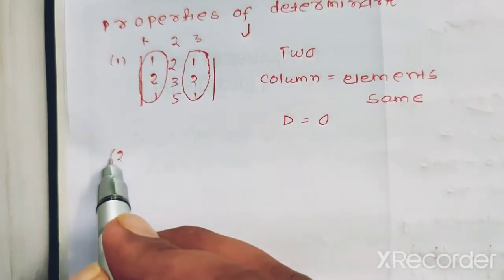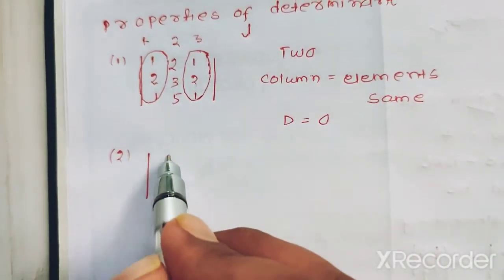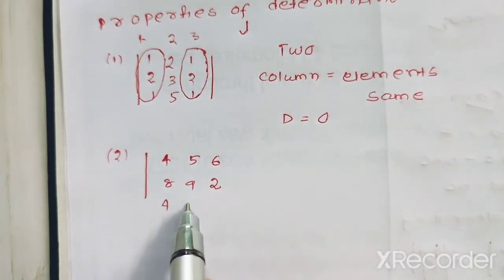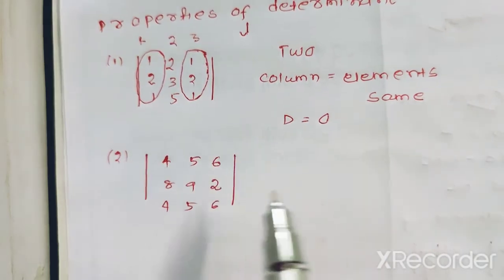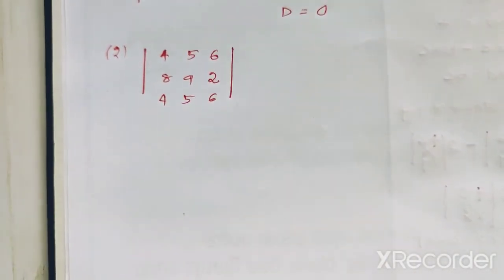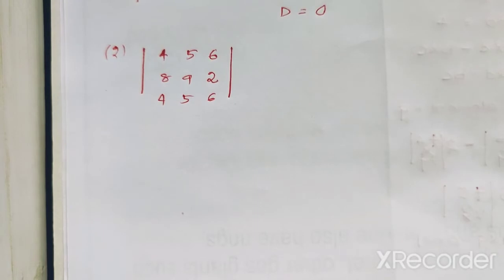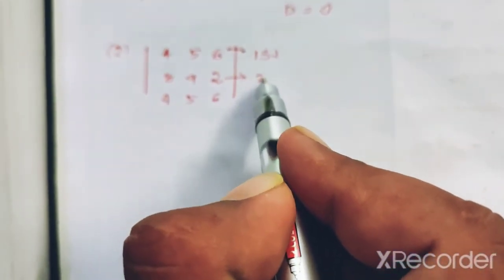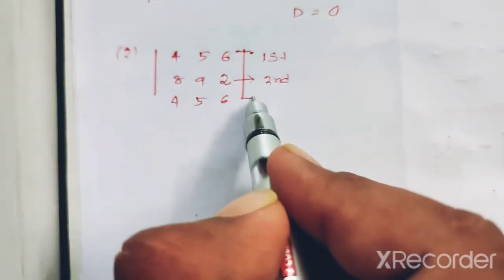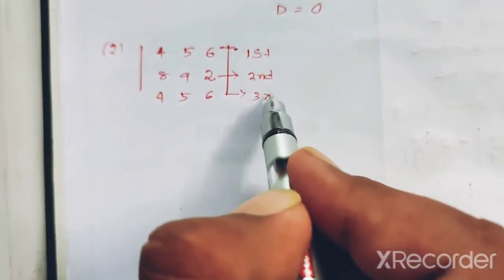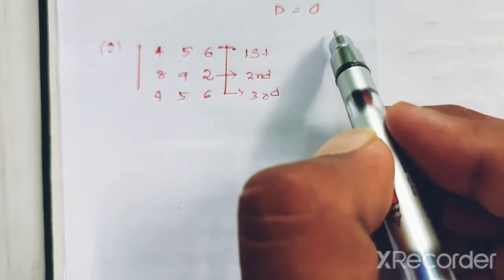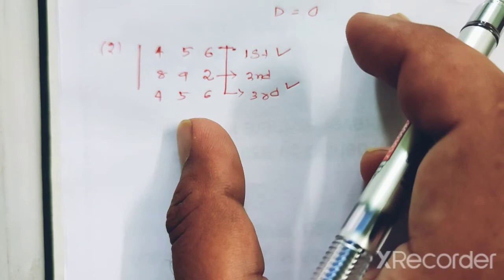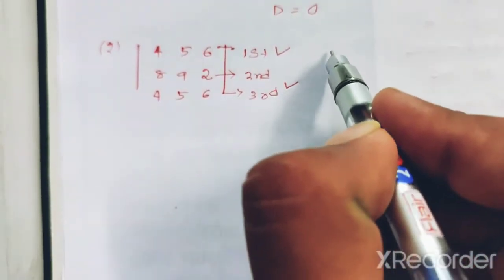Next, the second property. Consider a determinant with elements 4, 5, 6 in the second row and 8, 9, then 2, 4, 5, 6. The determinant of that matrix would be 0. The first row has the same elements as another row — 4, 5, 6 and 4, 5, 6 — so when two rows are identical the determinant is 0.